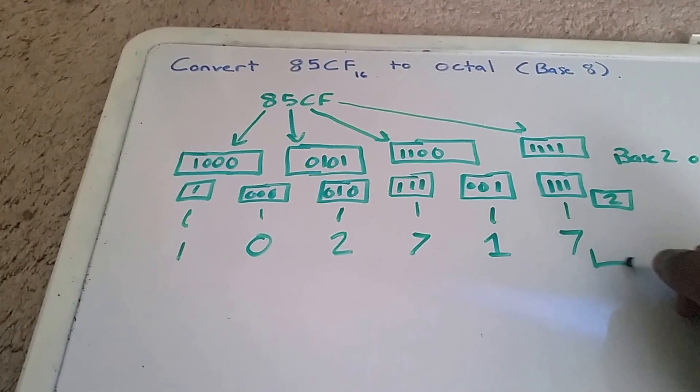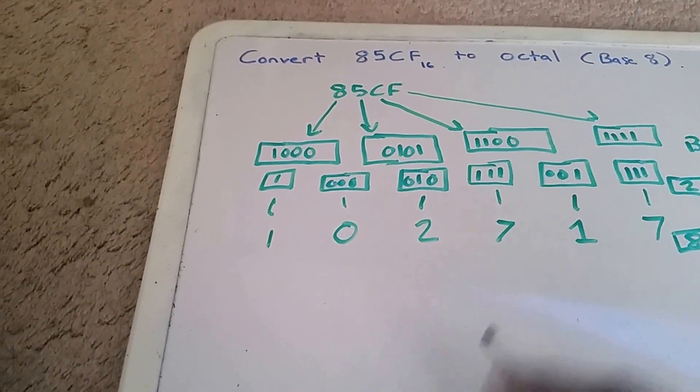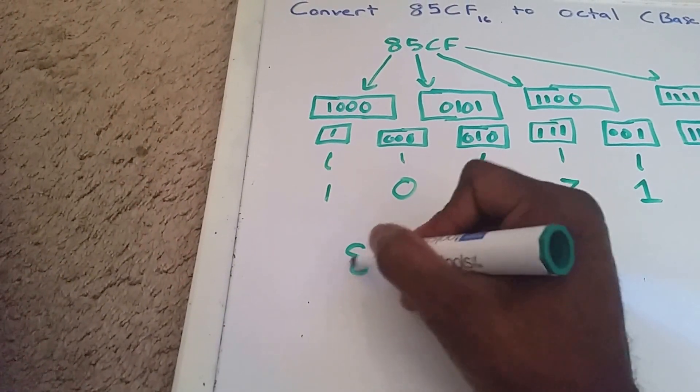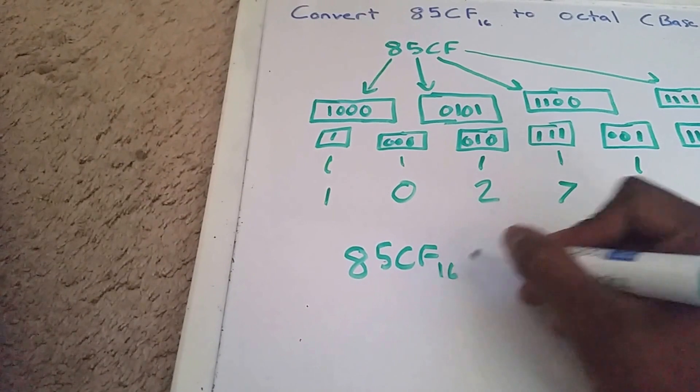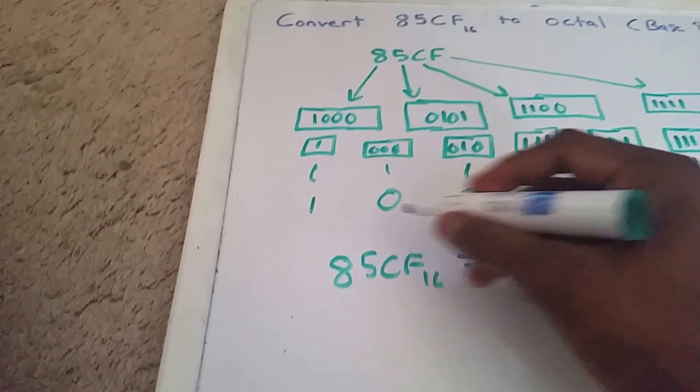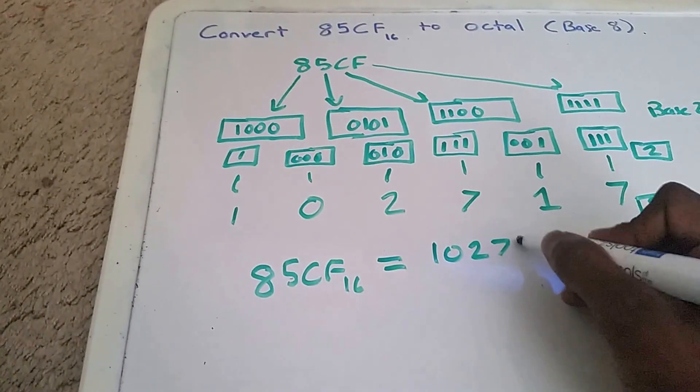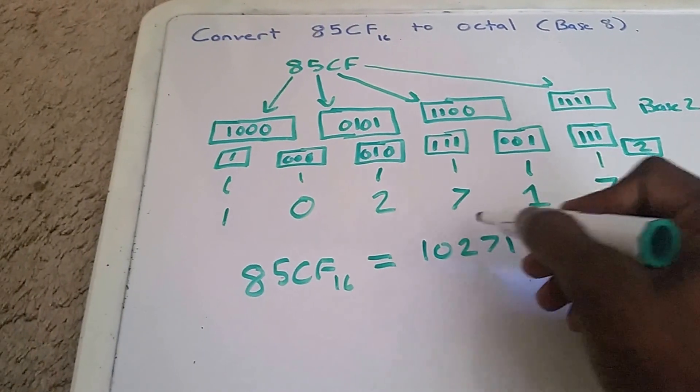And now here we have base 8. So the final solution is 85CF in base 16 is equal to 102717 in base 8. So that's the final answer.